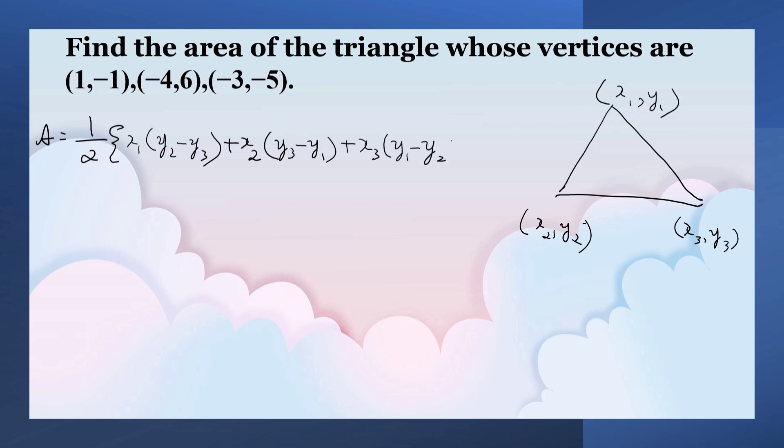In a cyclic order it should come. So now let us identify: (1, -1) is (x1, y1), (-4, 6) is (x2, y2), and (-3, -5) is (x3, y3).